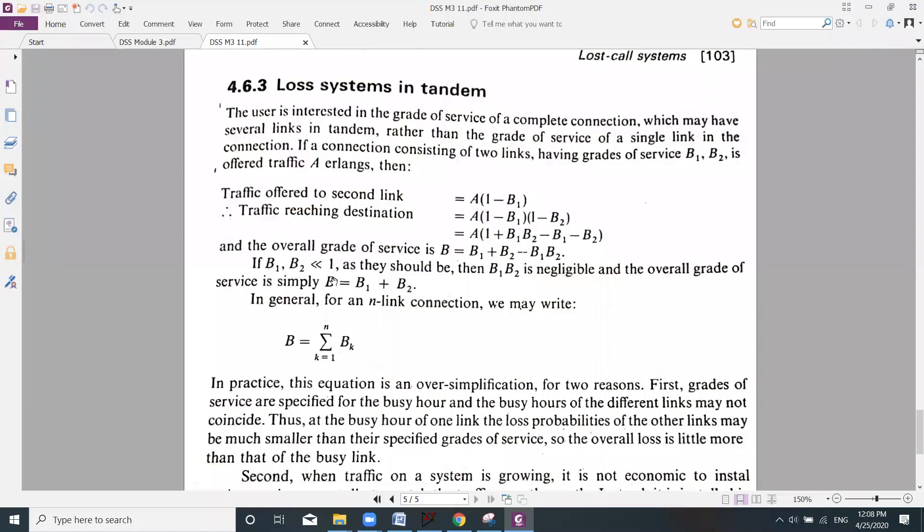If B1, B2 is less than 1, as they should be, then B1 into B2 is negligible. If B1 and B2 are very small values, if we multiply each other, we will get a smaller value. So if B1, B2 is negligible, the overall grade of service is simply given by B is equal to B1 plus B2. Grade of service of overall system is given by grade of service of individual links.